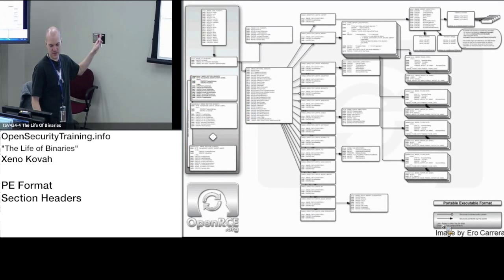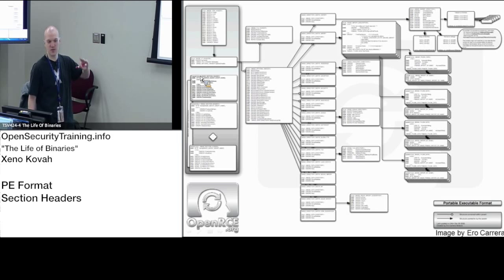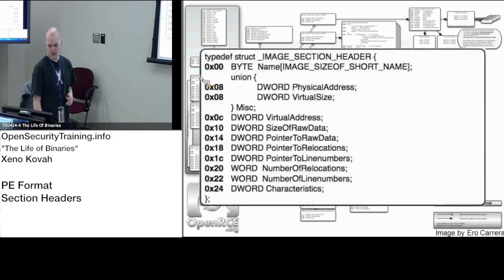This is the location where all the sections are. There's an array of section headers immediately after the NT header. The NT header has embedded in it a file header and optional header. So basically right after the optional header information, you should find the section headers. If you put even a single byte between those two, the OS loader is going to get confused — it always assumes that immediately after the optional header, you've got an array of data structures.